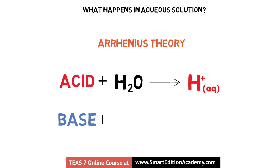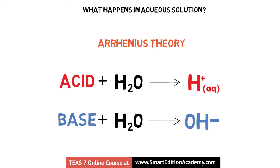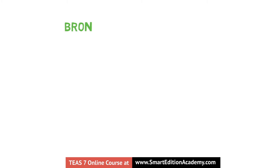Alternatively, bases will form hydroxide ions in water, designated as OH- ions, while they could also accept hydronium ions from the acids. Acidic solutions have more hydrogen ions than hydroxide ions, and basic solutions have more hydroxide ions than hydrogen ions. One limitation of this theory is that it does not account for acids and bases that lack a hydrogen or hydroxide ion in their molecular structure.